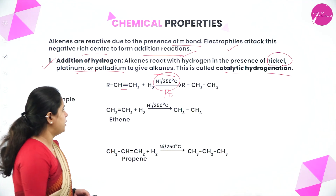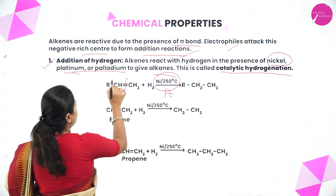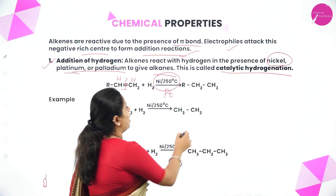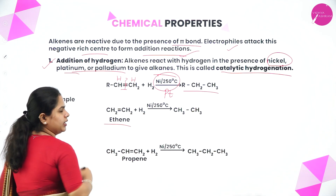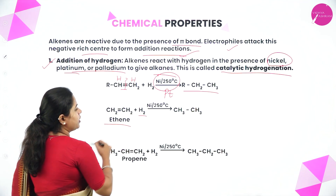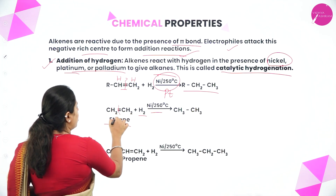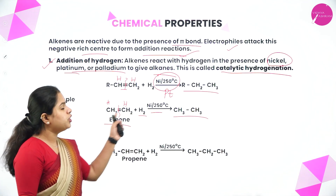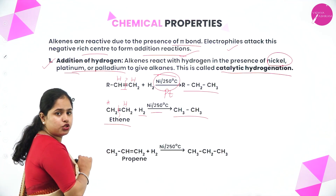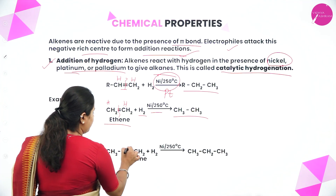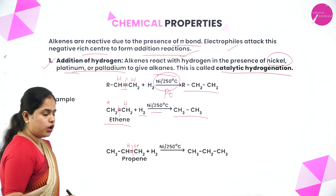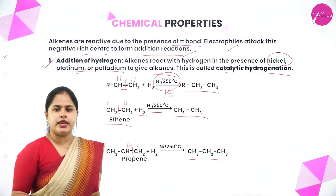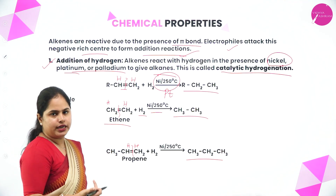When hydrogen is added, this double bond breaks — one hydrogen added here, one hydrogen added here. You will get RCH2–CH3. For example, CH2=CH2 (ethene) with hydrogen in the presence of nickel at 250°C gives CH3–CH3, which is ethane. Similarly, CH3–CH=CH2 (propene) with hydrogen in the presence of catalyst gives CH3–CH2–CH3, which is propane. So this is catalytic hydrogenation — addition of hydrogen in the presence of a catalyst.